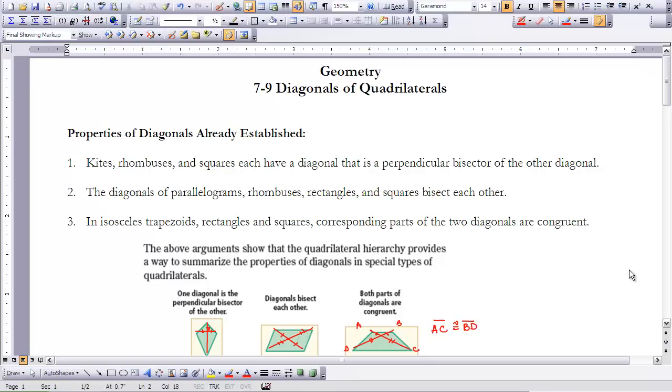So let's look at what we already know. Kites, rhombuses, and squares each have a diagonal that is the perpendicular bisector of the other diagonal. We know the diagonals of parallelograms, rhombuses, rectangles, and squares bisect each other.